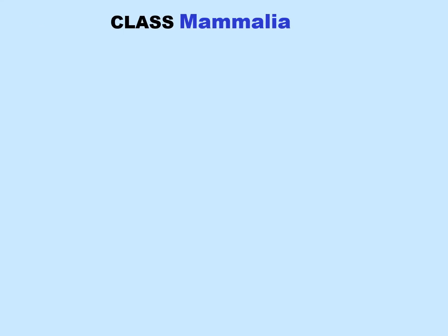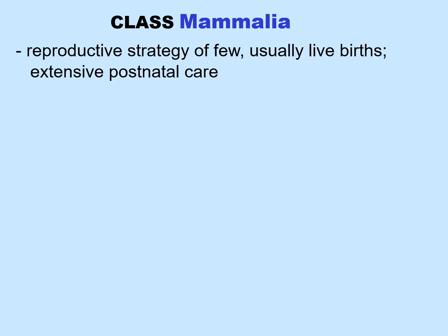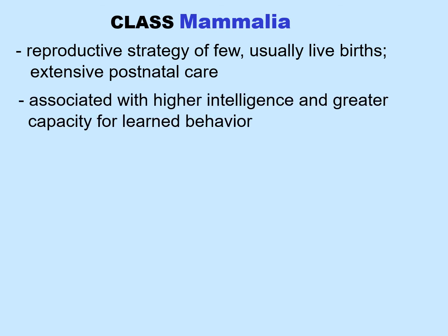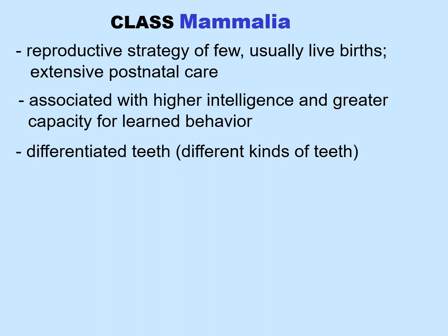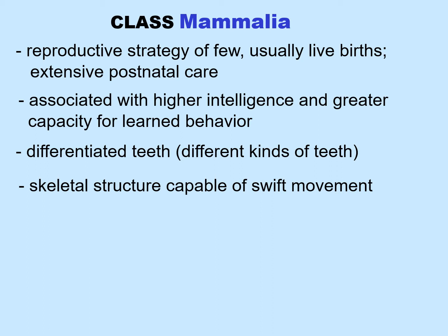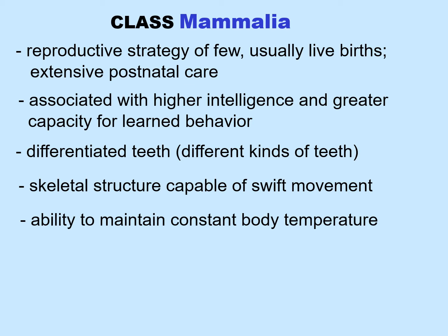Let's look at the characteristics that mammals share. We have a reproductive strategy of few, usually live births, and the children require extensive postnatal care. Mammals are associated with higher intelligence and greater capacity for learned behavior. They also have differentiated teeth — incisors, canines, and molars. Mammals have a skeletal structure capable of swift movement and the ability to maintain constant body temperature.